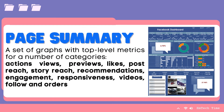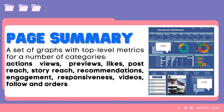The page summary has a set of graphs with top-level metrics for a number of categories. These are the following categories: Actions on page — the combined total clicks from your contact information and call-to-action button. Page views — total views of your Facebook page including people not logged into Facebook. Page previews — the number of times people hover their mouse over your page information to see a preview of your page. Page likes — the number of new likes. Post reach — the number of people who saw your post in their timeline. Story reach — the number of people who saw your stories. Recommendations — the number of people who recommended your page.